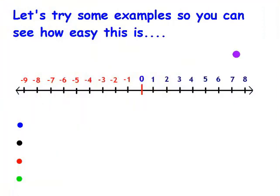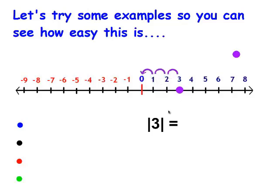Let's try some examples so you can see how easy this is. I want to find the absolute value of 3. To do this, I'm going to take this pointer and put it on 3. And remember, the absolute value is the distance that number is from zero. So I'm going to count: 1, 2, and 3. The absolute value of 3 is 3.